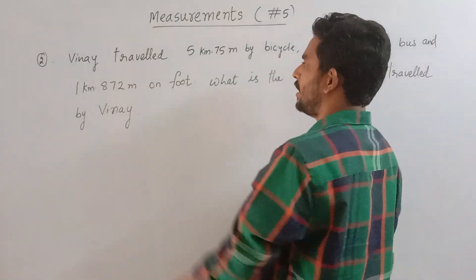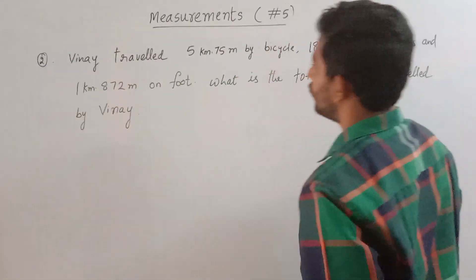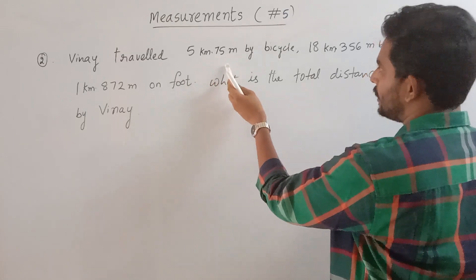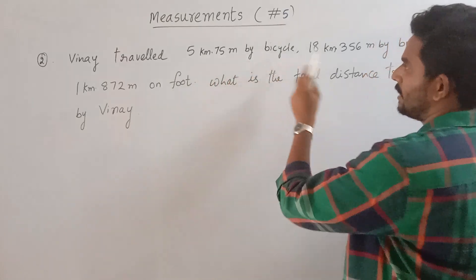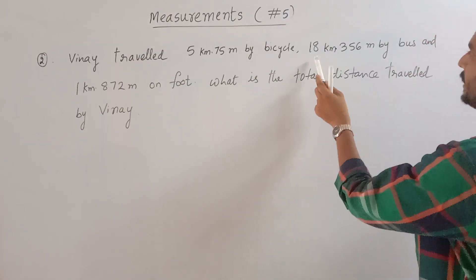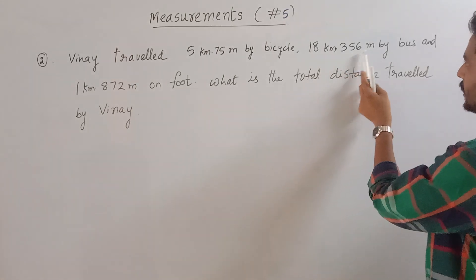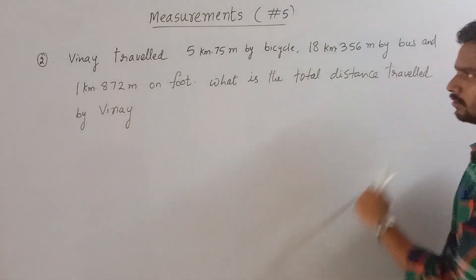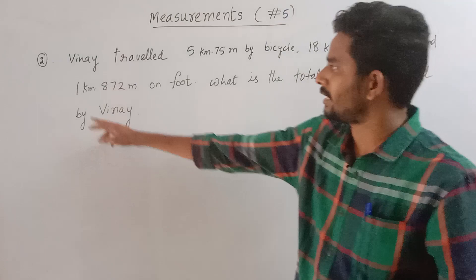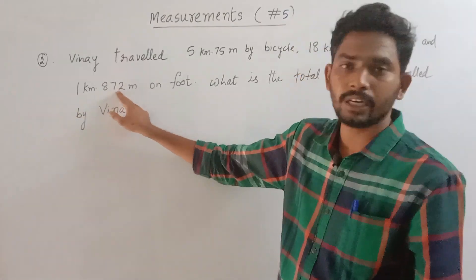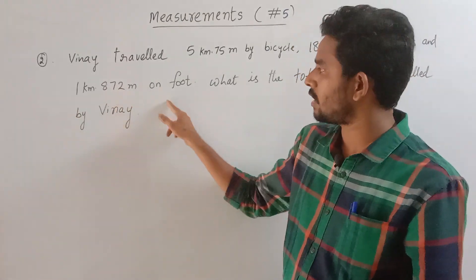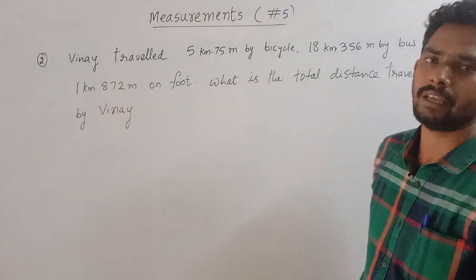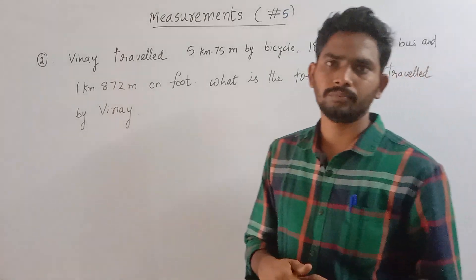Vinay traveled 5 kilometers 75 meters by bicycle, 18 kilometers 356 meters by bus, and 1 kilometer 872 meters on foot. What is the total distance traveled by Vinay?